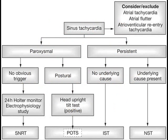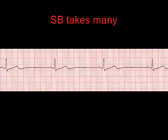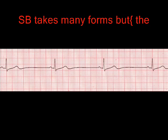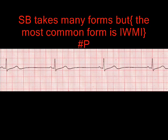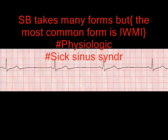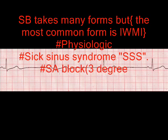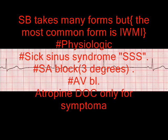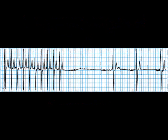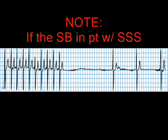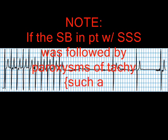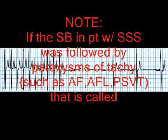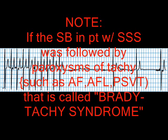Sinus bradycardia on the other hand takes many forms, but the most common form is the inferior wall MI. Other forms include physiological sinus sick syndrome, sick sinus syndrome, and SA block. Atropine should be the drug of choice for the patient with sick sinus syndrome followed by paroxysmal tachycardia.